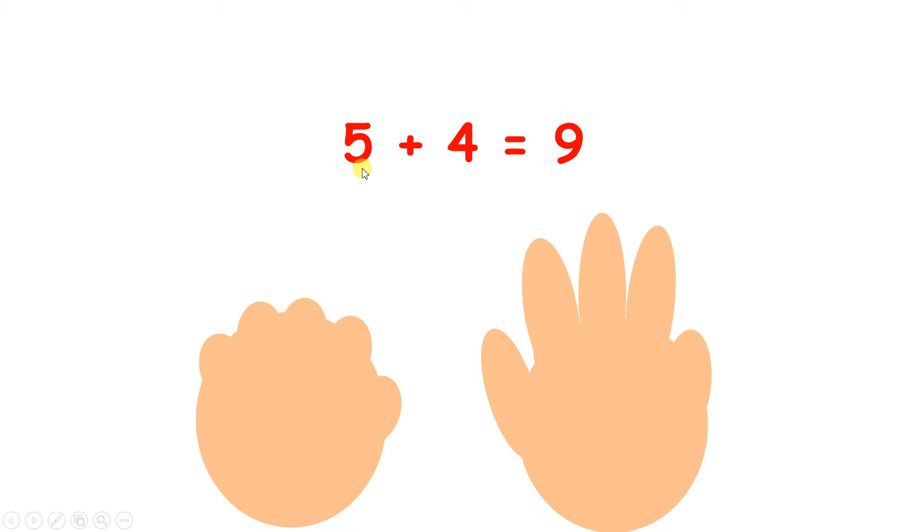So we're starting on 5 so we say 5 and then we put a finger down for 6, 7, 8, 9. There we go. Some people find that easier and some people use this to check to make sure that they've got the right answer like we did on our first question.